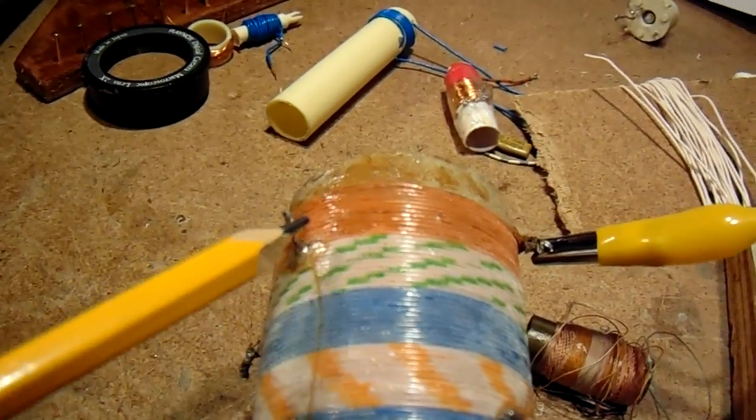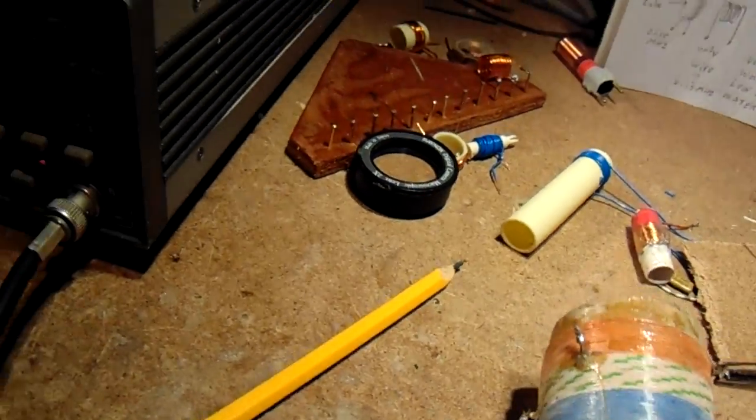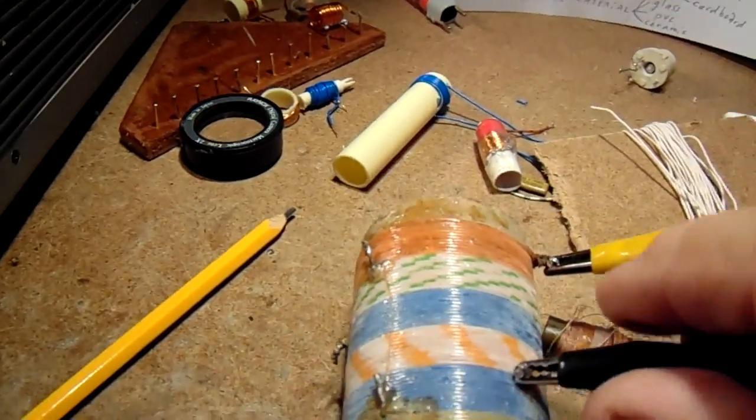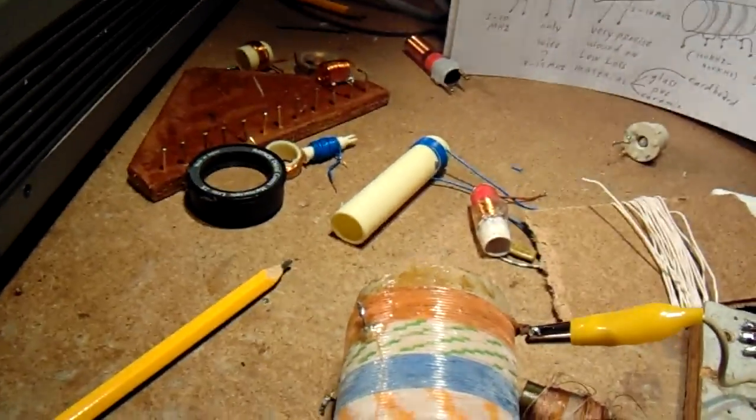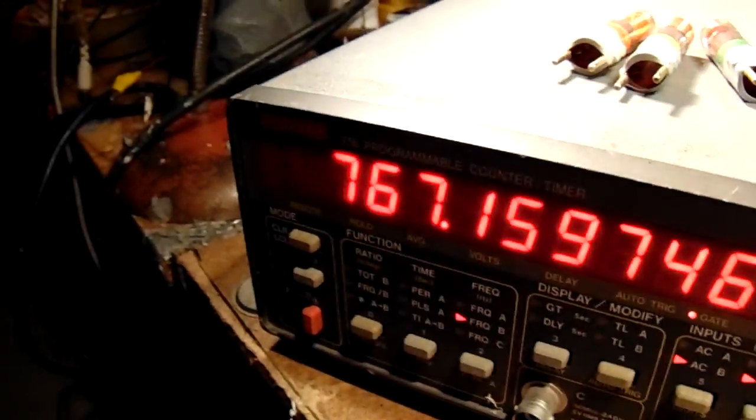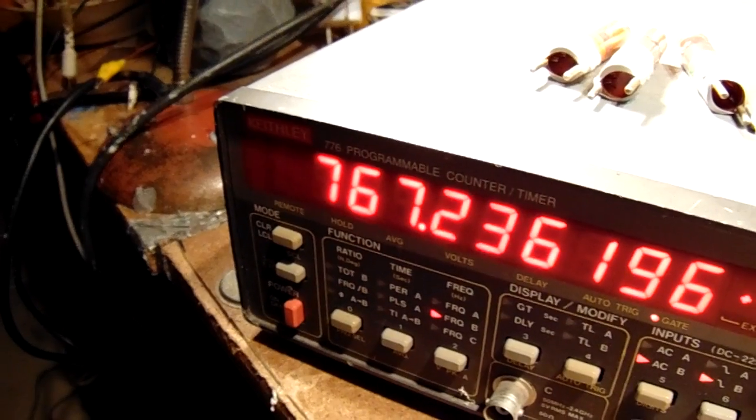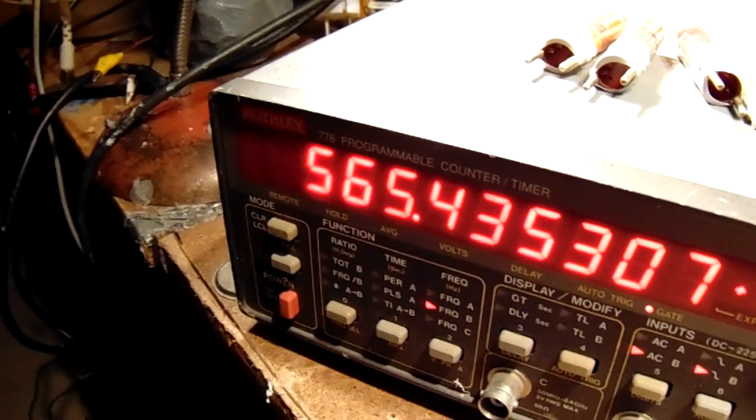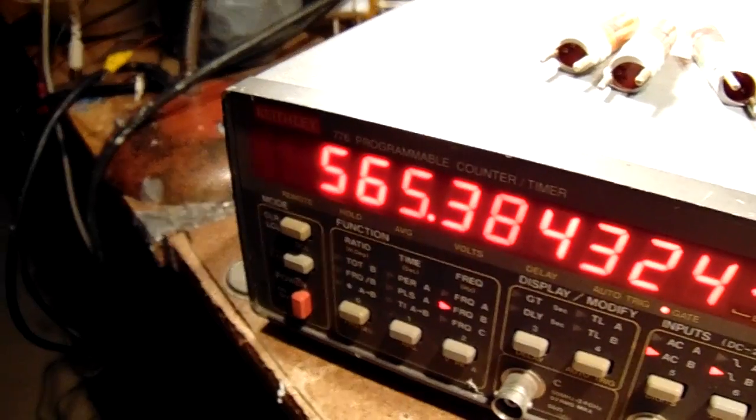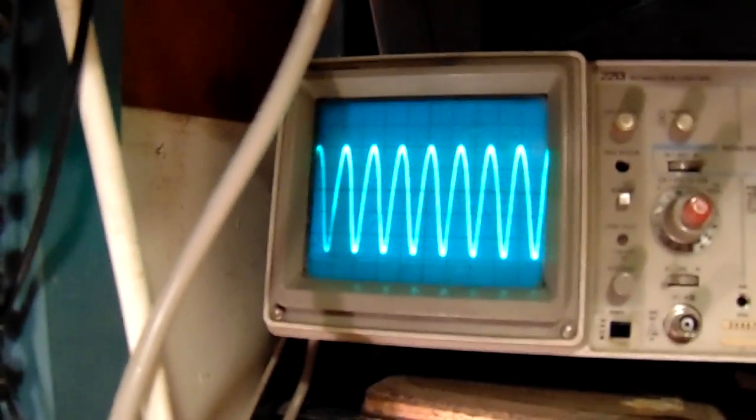And you can see on this coil all kinds of tabs. So when you shortcut the coil, for instance here, you can see that the frequency goes up. Now the coil is shortcut, a part of the coil is not active any longer, and now it goes back to a lower frequency. On the scope you can see that too, higher frequency, lower frequency.